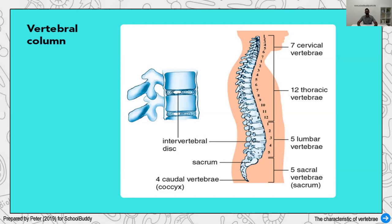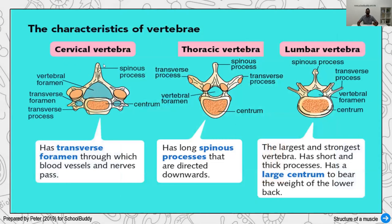Now let's look at specific characteristics of different vertebral columns. The first cervical vertebrae has an important feature called the transverse foramen. Transverse foramen are openings where blood vessels and nerves pass through, because they are located close to the brain. All the nerves and blood vessels coming from the brain to all parts of the body pass through here. Use the transverse foramen to identify whether a vertebra is cervical, thoracic, or lumbar — transverse foramen indicates cervical vertebrae.